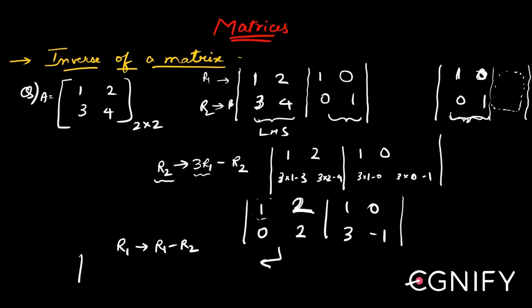So this will become 1 minus 0, which is 1, 2 minus 2, which is 0, this will be 1 minus 3, which is minus 2, this will be 0, and the second row will remain as it is.